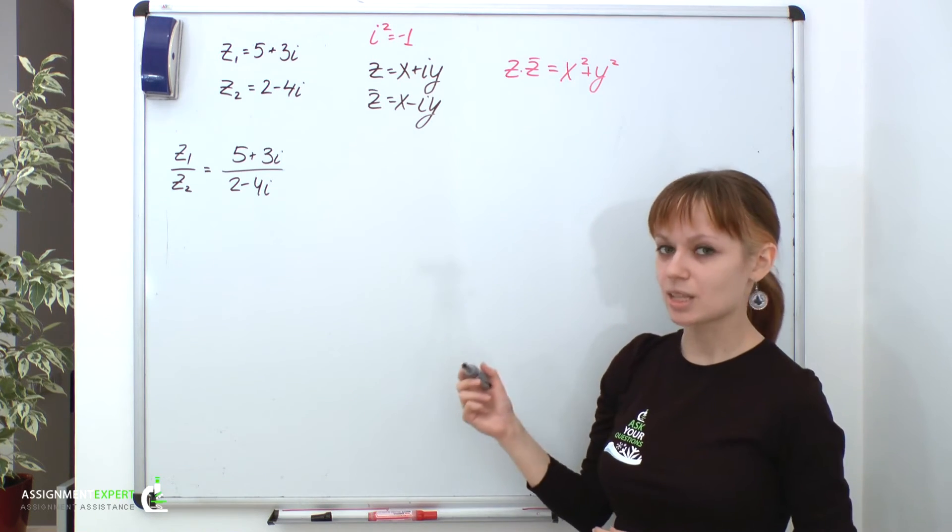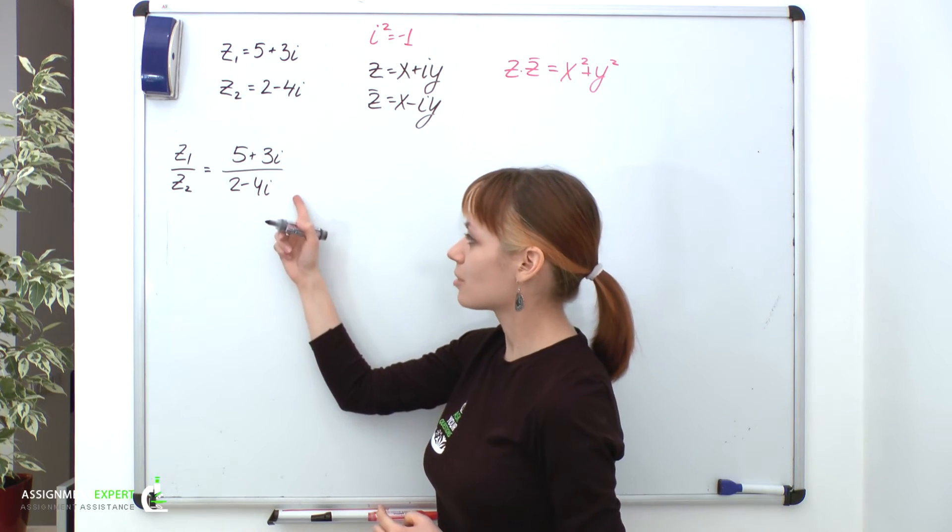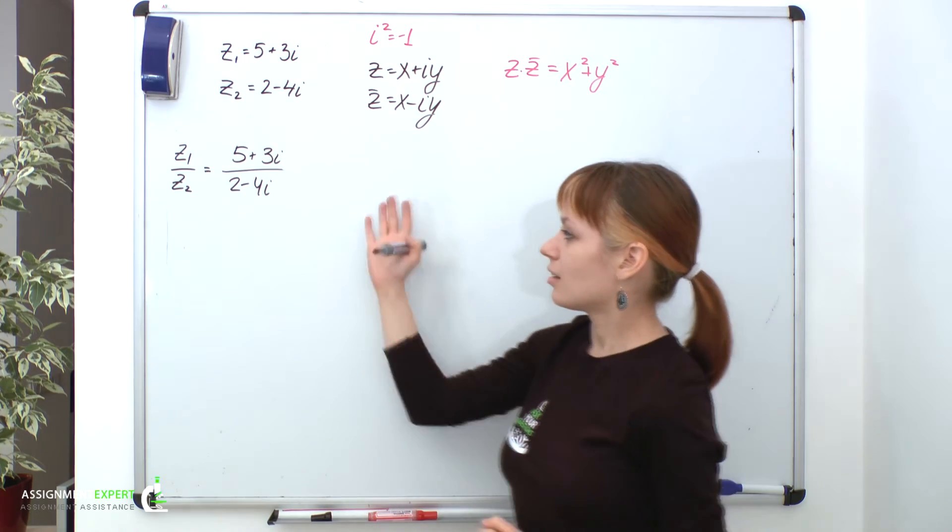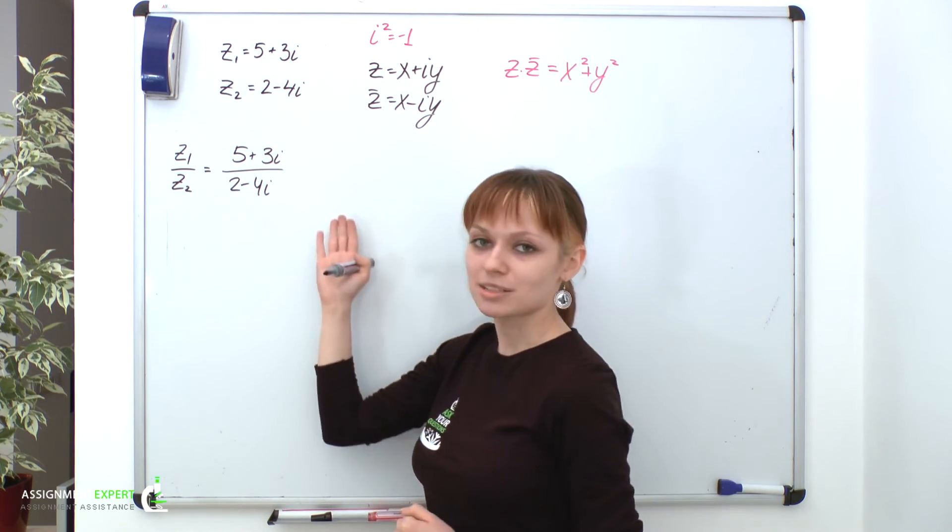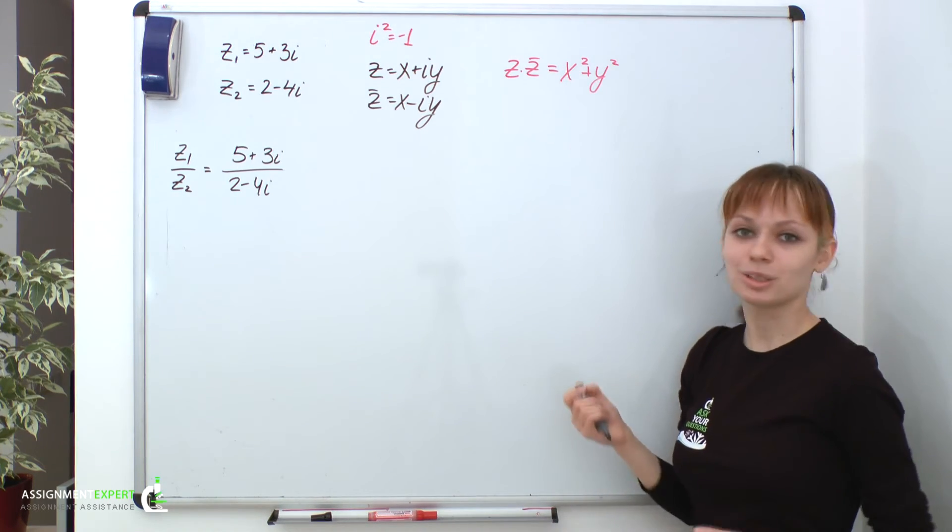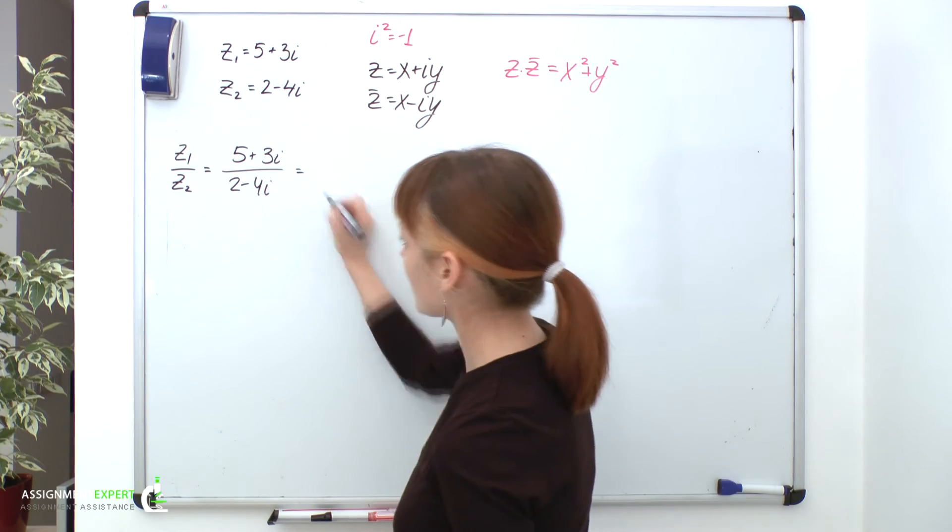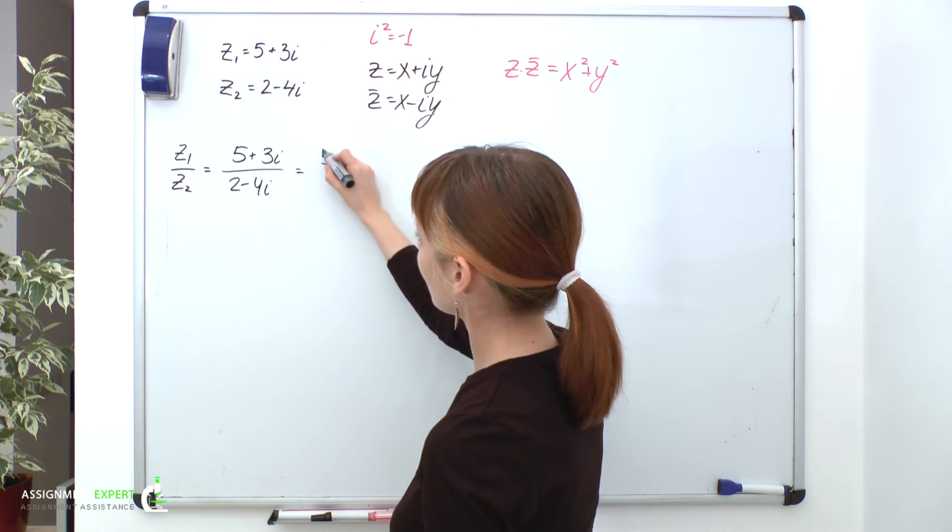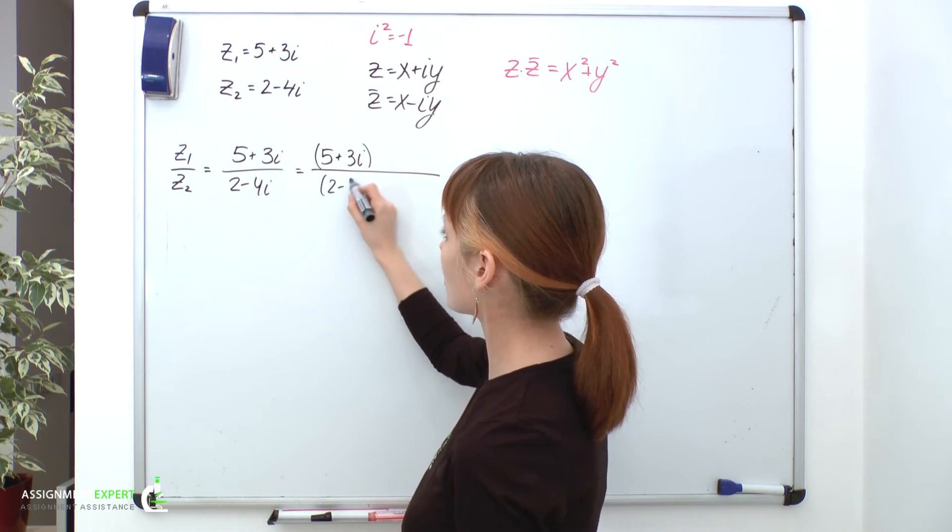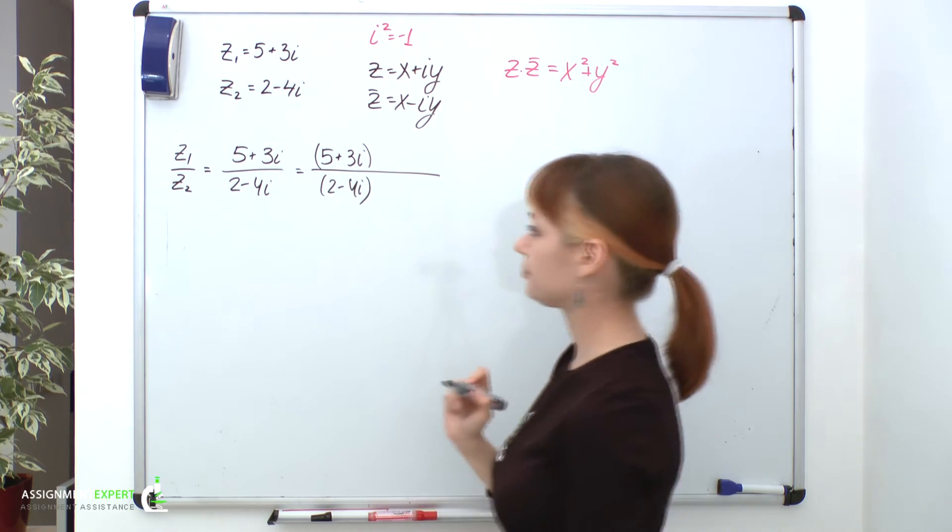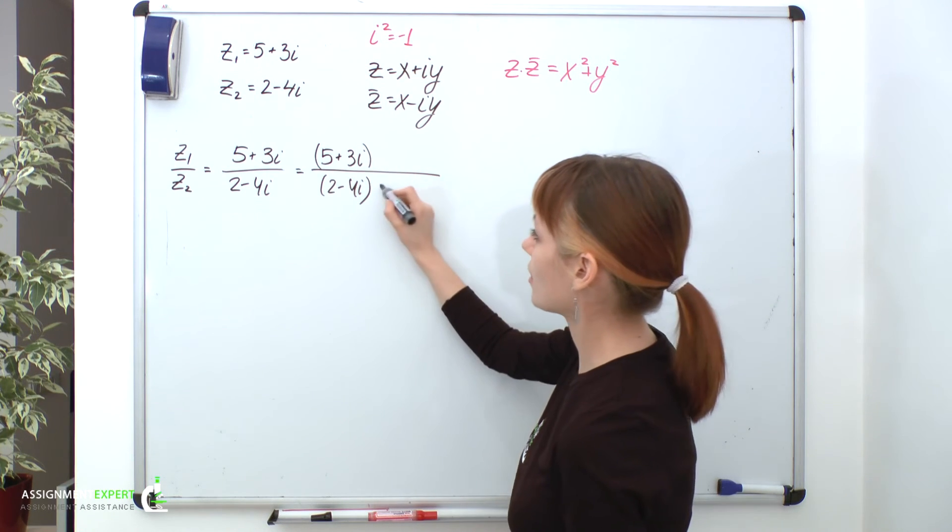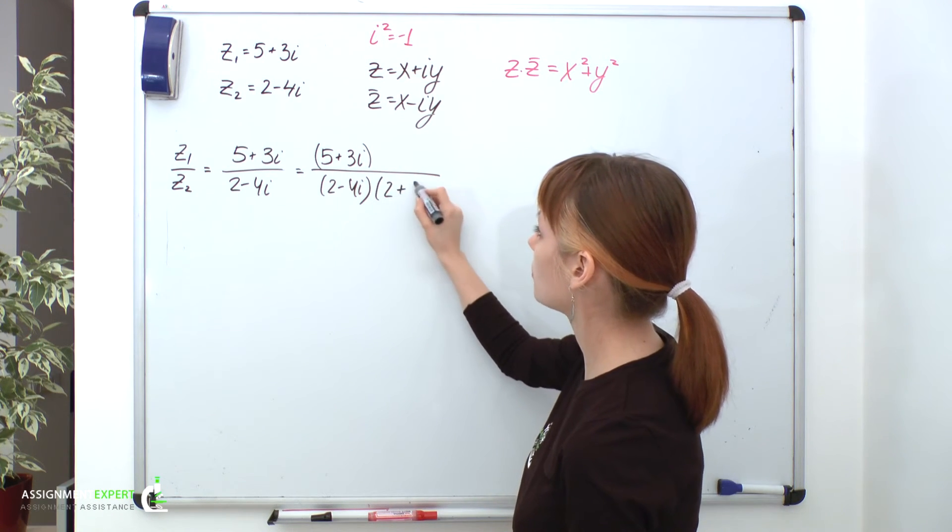And that's where complex conjugates come in handy. The trick here is that we want to multiply the fraction's top and the bottom by the bottom's complex conjugate. This way, we'll have a product of two complex conjugates in denominator. And the product of two complex conjugates is a real number. Exactly what we need. So, let's do that. Now, we still have 5 plus 3i in the top and 2 minus 4i in the bottom. And now, we'll multiply the top and the bottom by the bottom's complex conjugate. And that being 2 plus 4i.